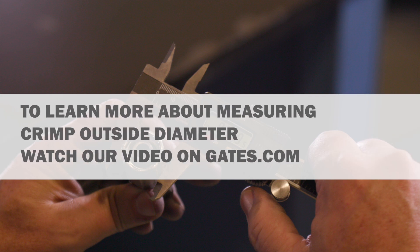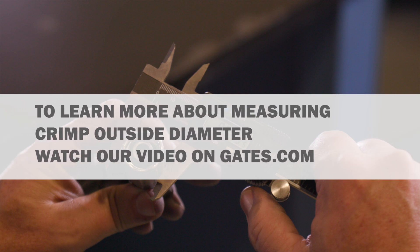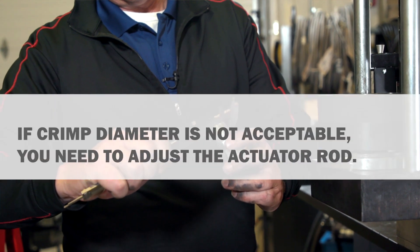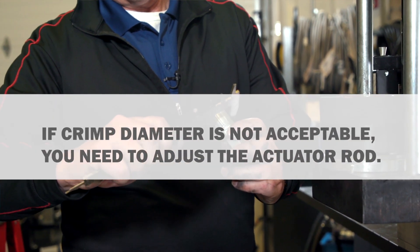To learn more about measuring crimp outside diameter, be sure to watch our video on the topic. If the ferrule crimp diameter is not acceptable, you will need to adjust the actuator rod.